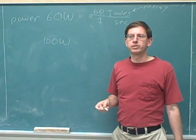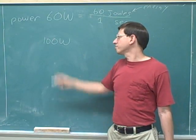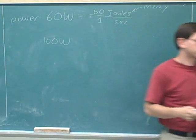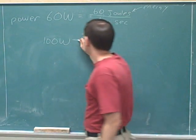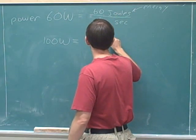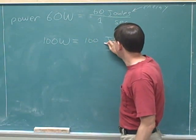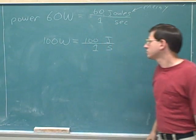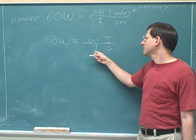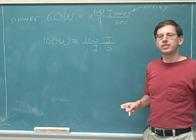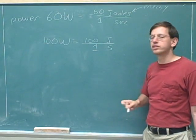Suppose you have a 100 watt light bulb. Try pausing the video and articulating to yourself: what does it mean if a light bulb is 100 watts? We've learned that watts are joules per second, so we combine the number and the units into a single ratio. A 100 watt light bulb means that if you run the bulb for one second, it will use up 100 joules of energy. That doesn't mean you're actually using it for one second, but if you did, it would use 100 joules of energy.